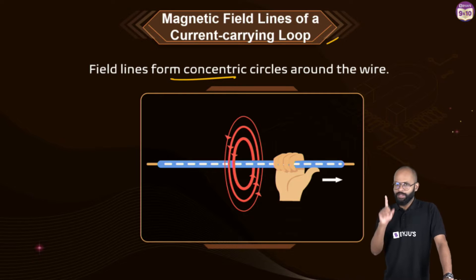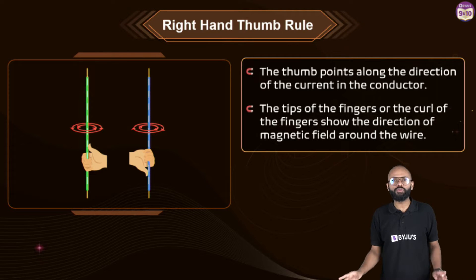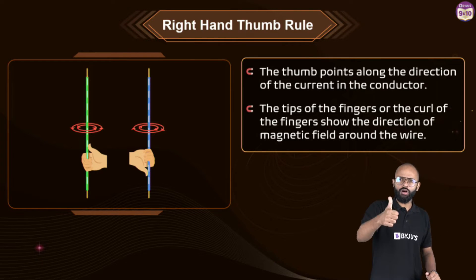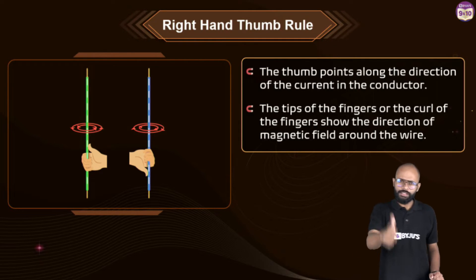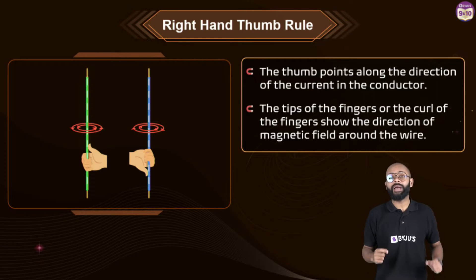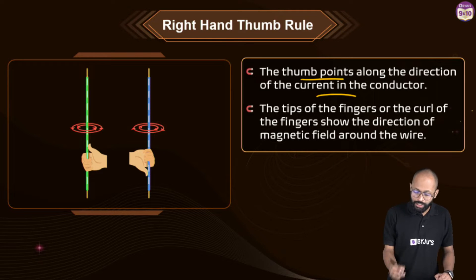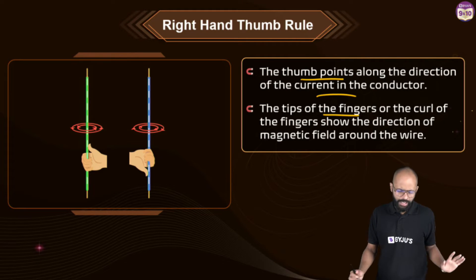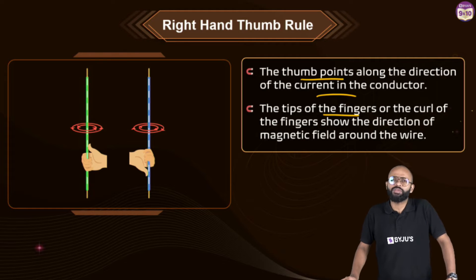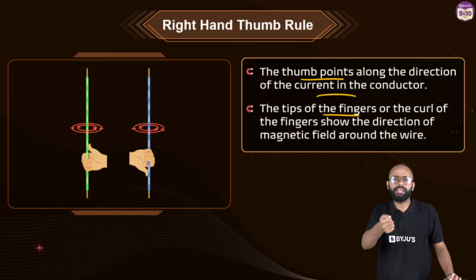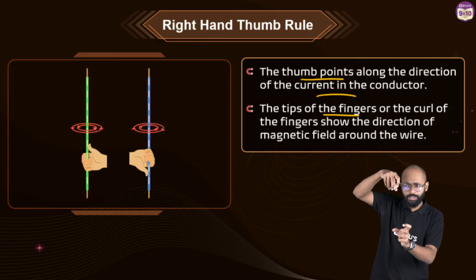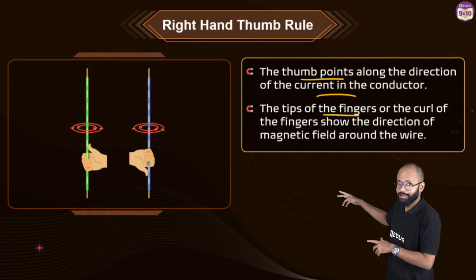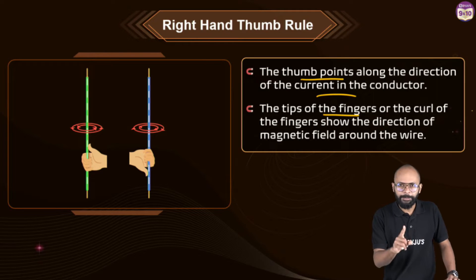How do we find the direction of magnetic field lines? That's answered by the right-hand thumb rule. Point your thumb in the direction of current and curl your fingers around it — the thumb points along the current direction in the conductor, and the curl of the fingers shows the direction of the magnetic field around the wire. There's also a similar rule called Maxwell's corkscrew rule, like tightening a bottle cap.